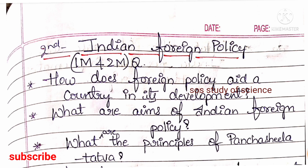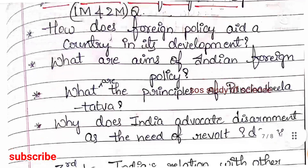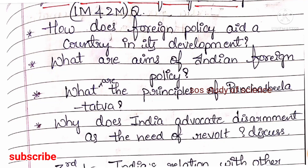The second lesson of Political Science is Indian Foreign Policy. Here usually 1-mark and 2-mark questions are asked. Important concepts: how does foreign policy aid a country in its development, what are the aims of Indian foreign policy, what are the principles of Panchashila Tattva, and why does India advocate disarmament.